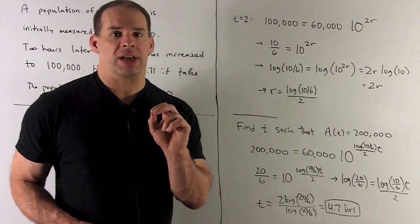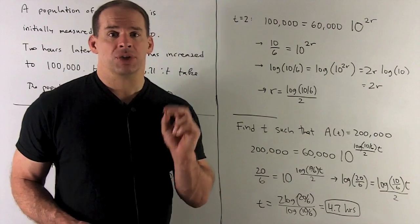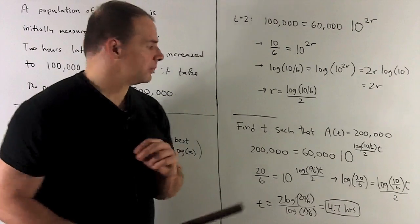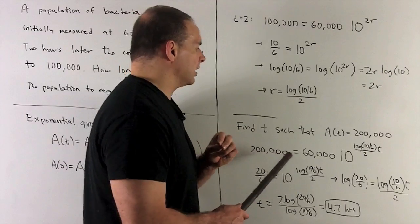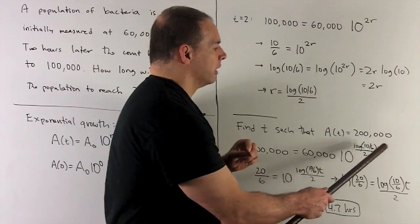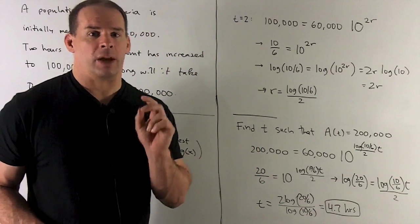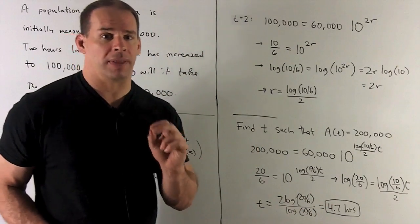The question asks, how about 200,000? So I'll set that equal to my equation. 200,000 equals 60,000 times 10 to my expression for r, and then we have t, and I want to solve for t. That'll be the time where I have 200,000.